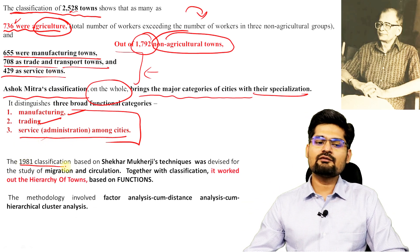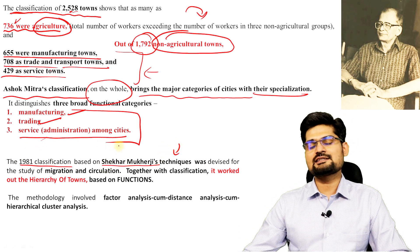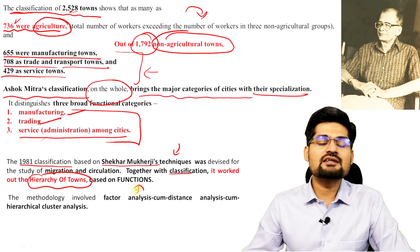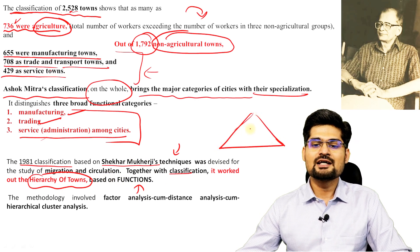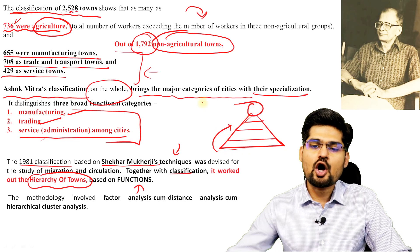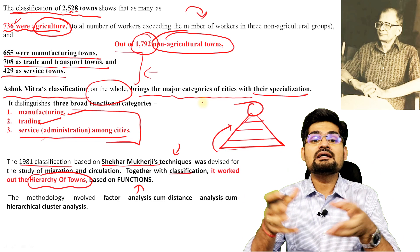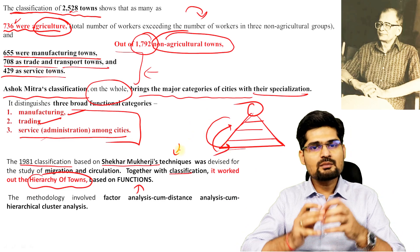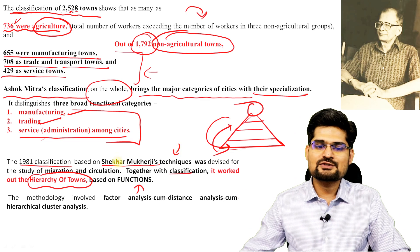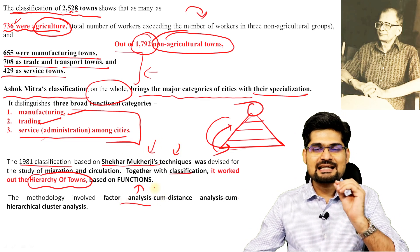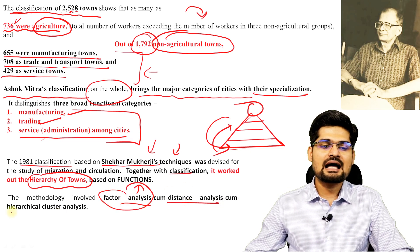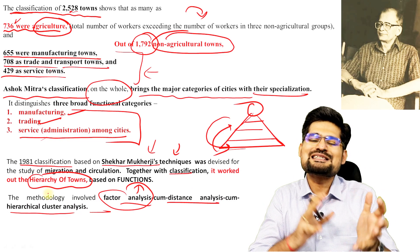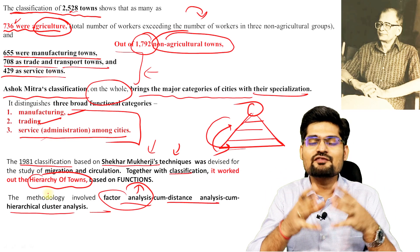In 1981, another classification by Sheikha Mukherjee using techniques and modifications of Ashok Mitra was undertaken. Together with this classification, it worked out the hierarchy of towns based on their functions. As you go up the hierarchy, towns have greater specialization as well as diverse functions; as you go down the hierarchy, there are more towns but they are less specialized. The analysis was done using statistical tools like factor analysis, distance analysis, and hierarchical cluster analysis.